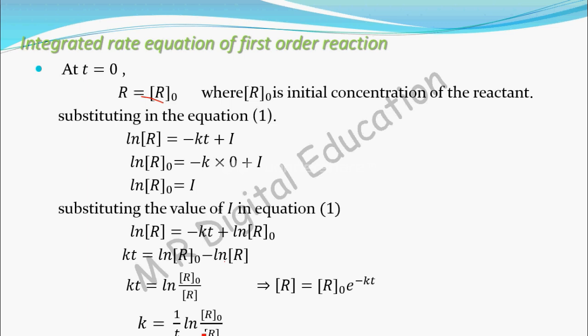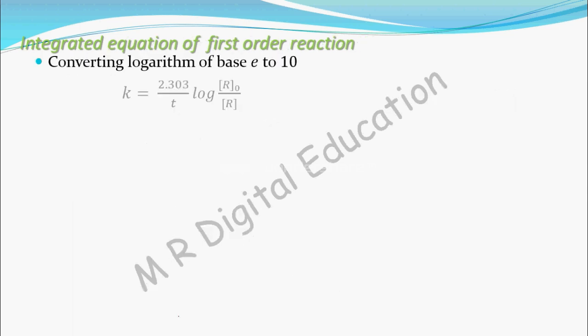This is in logarithm of base e. If you want to convert it to logarithm of base 10, you multiply by 2.303. So converting base e to base 10: k equals 2.303 by t times log of R naught by R. This is the integrated rate equation for a first-order reaction. Please remember this — k equals 2.303 divided by t times log of R naught by R — as most problems use this equation.